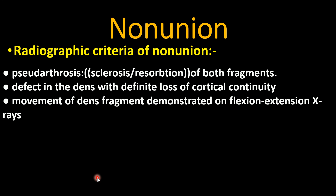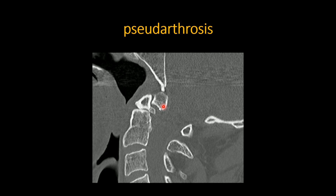Regarding non-union, there are radiographic criteria: pseudoarthrosis in the form of sclerosis or resorption of both fragments, or a deficit in the dens with definite loss of cortical continuity, and movement of the dens fragment demonstrated on flexion-extension X-rays. Pseudoarthrosis indicates non-union.